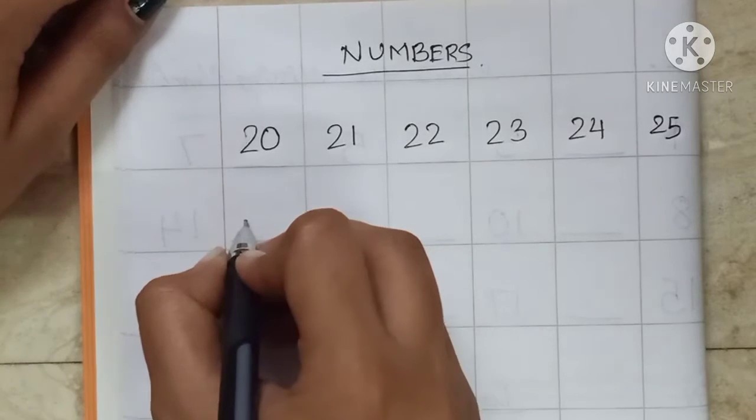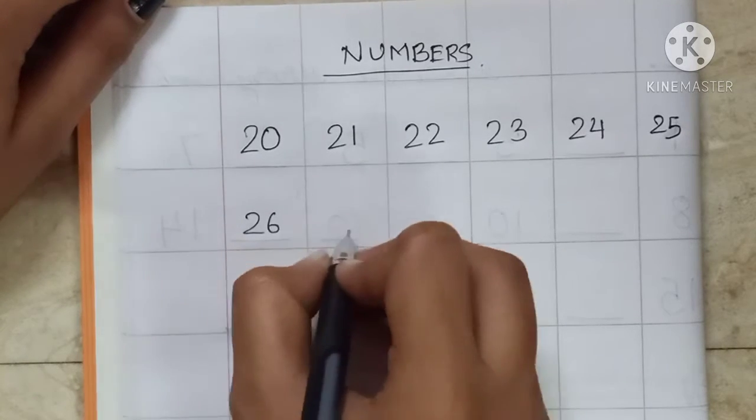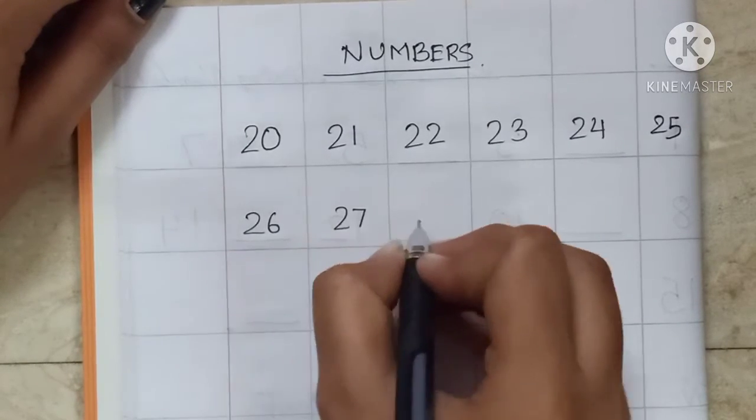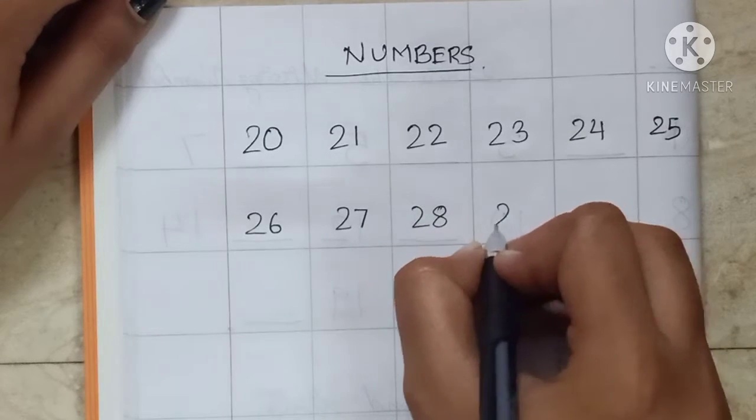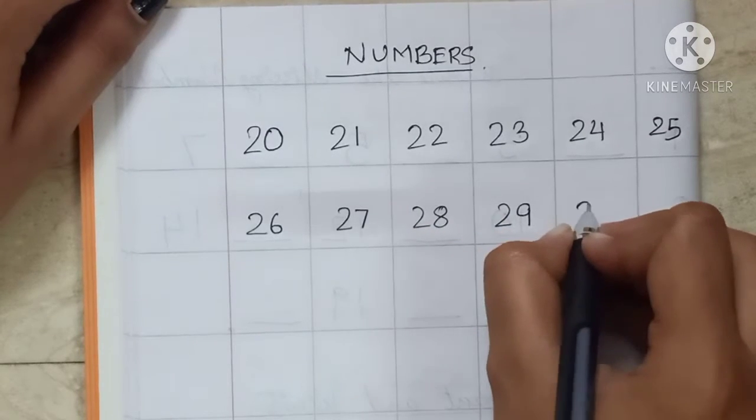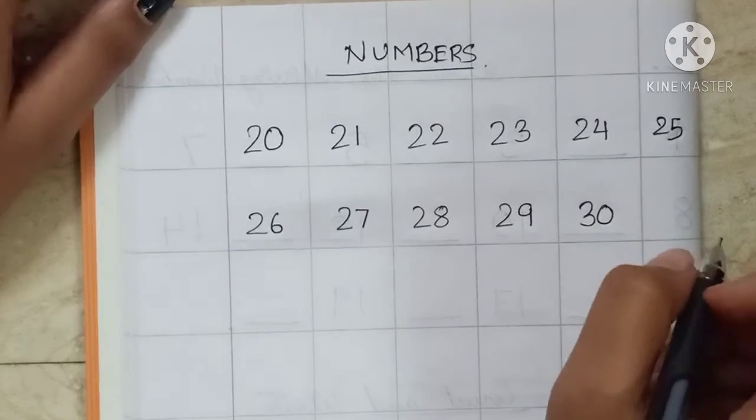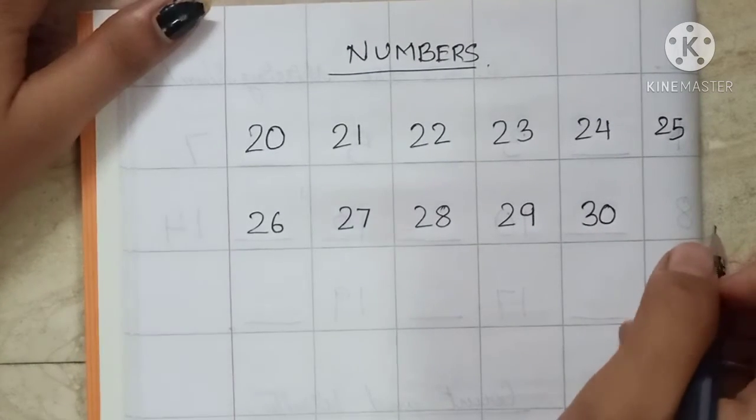Today we are going to write from 26, 27, 28, 29, 30. Most important is identification.